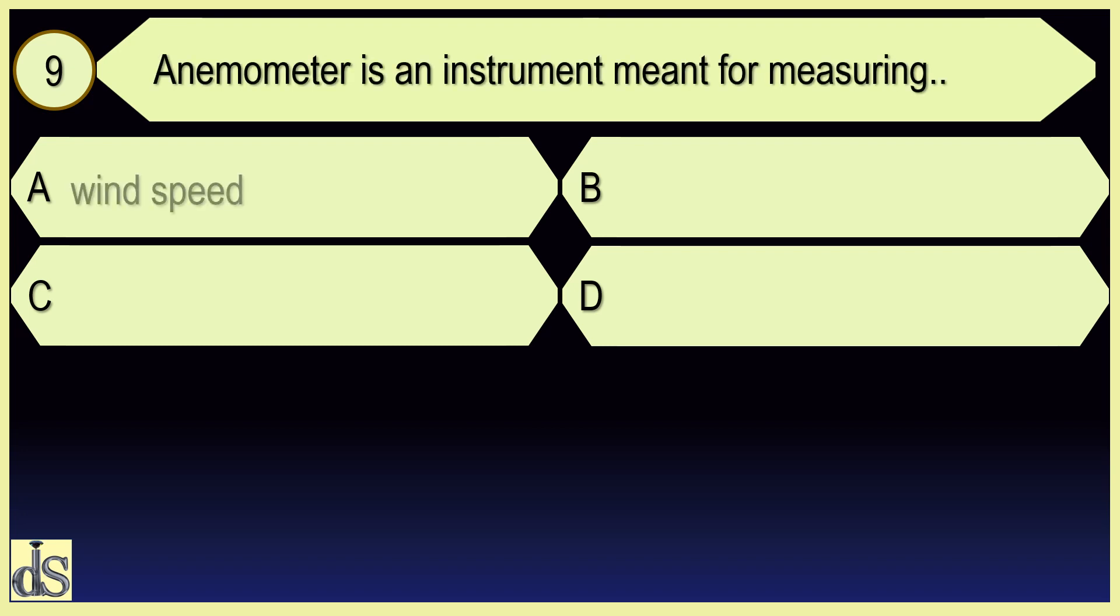Anemometer is an instrument meant for measuring wind speed.